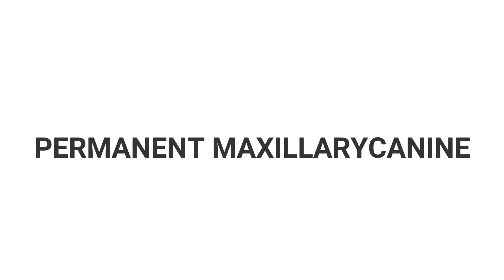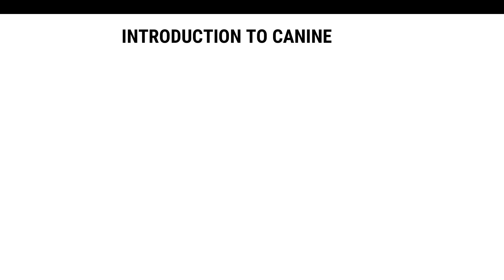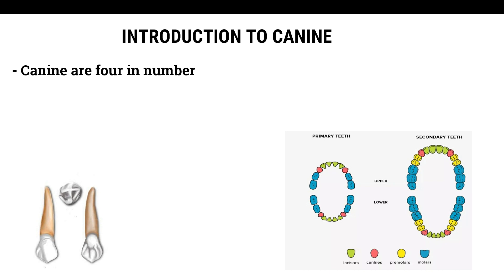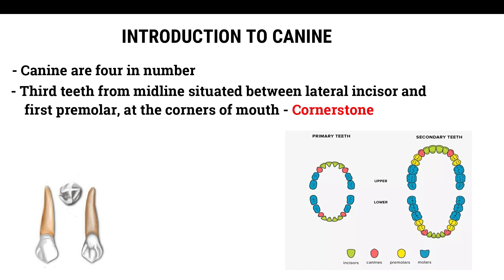Permanent Maxillary Canine. Canines are 4 in number, 2 in maxillary arches and 2 in mandibular arches. They are the third teeth from the midline, situated between the lateral incisor and first premolar at the corners of the mouth, hence called the cornerstone of the dental arch. They are also called cuspid since they possess a single cusp.